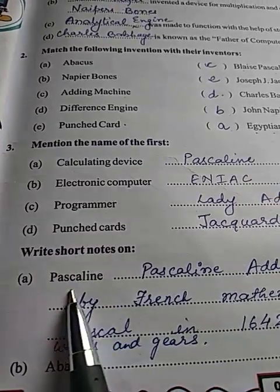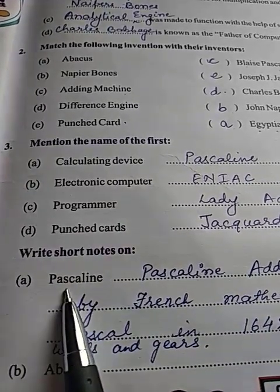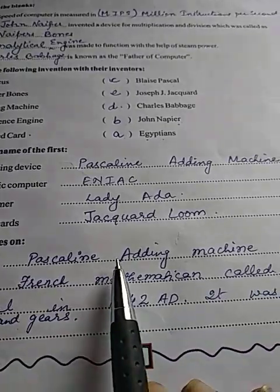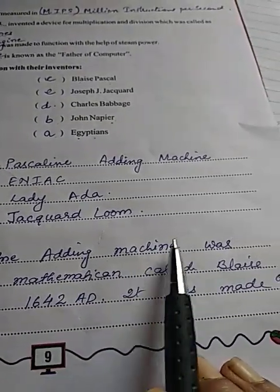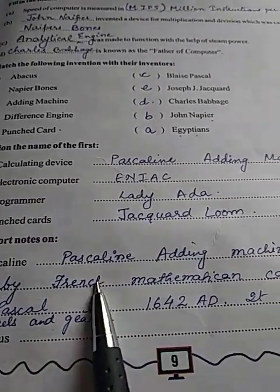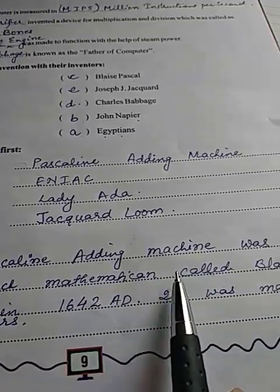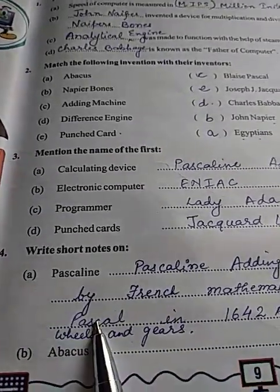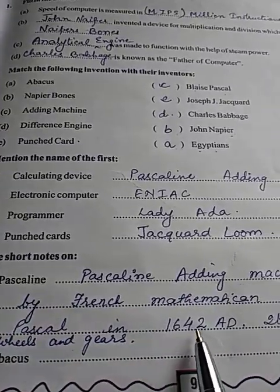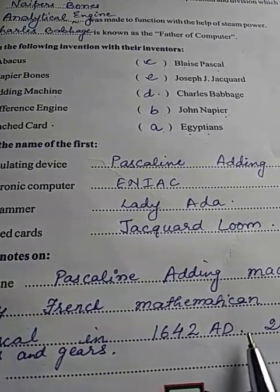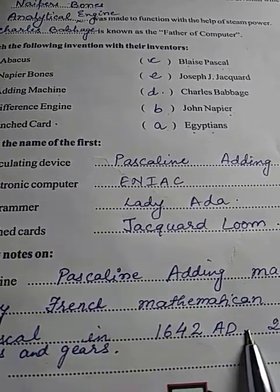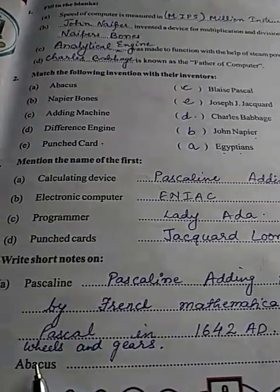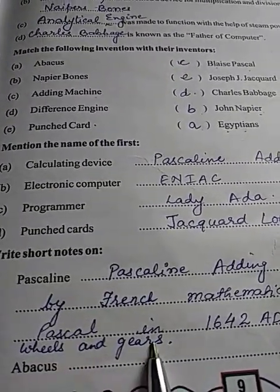Write short notes on Pascaline. Pascaline adding machine was invented by French mathematician Blaise Pascal in 1642 AD. It was made up of wheels and gears.